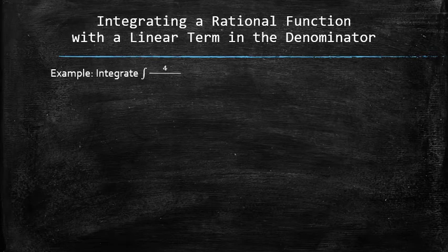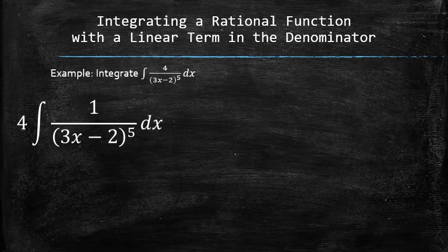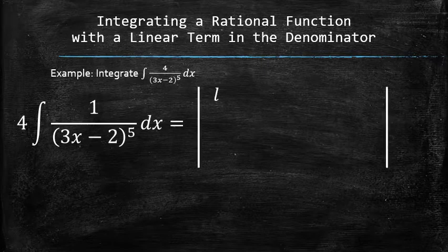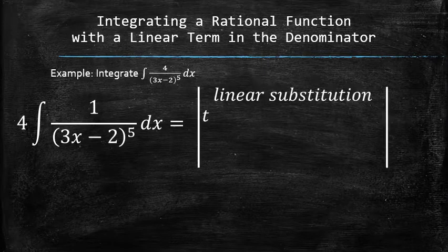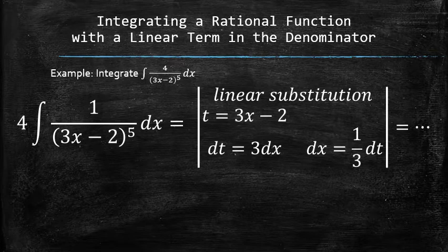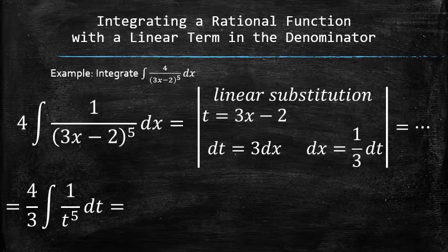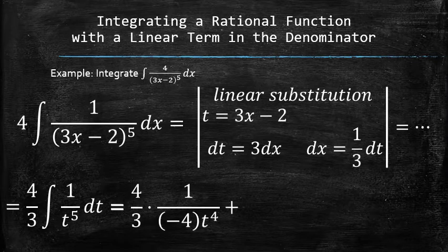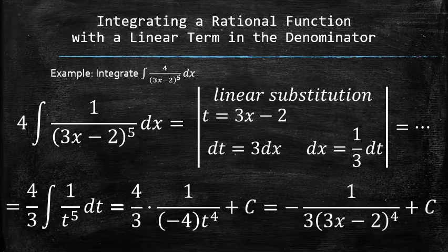We factor out 4 right away and set up the linear substitution by setting t equal to 3x minus 2, finding the differential of t, and expressing dx in terms of dt. As a result, we have a simple indefinite integral in terms of t. We continue with the integration process by finding the antiderivative and replacing t with the original expression 3x minus 2.